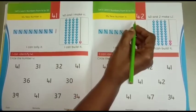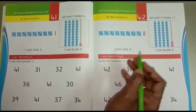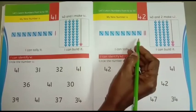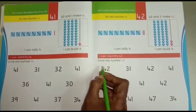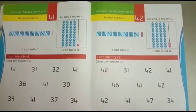My new number is 42. 40 and 2 make 42. Count 42 beads. Tally mark, practice. Then circle the number 42. Okay.